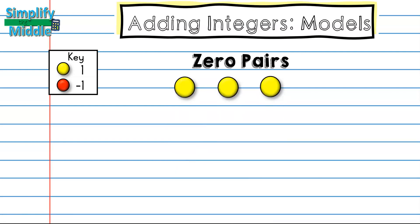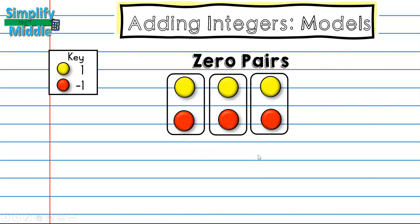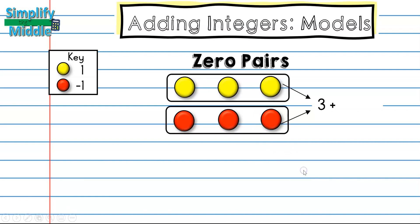This is true no matter how many sets of zero pairs you have. Here I have three positive ones so I have positive three and here I have three negative ones so I have negative three. Each of these is going to make a zero pair. So this problem if I were to write it out is three plus negative three equals zero. If I think about this in terms of money if I had three dollars and I spent three dollars I'll have zero dollars.